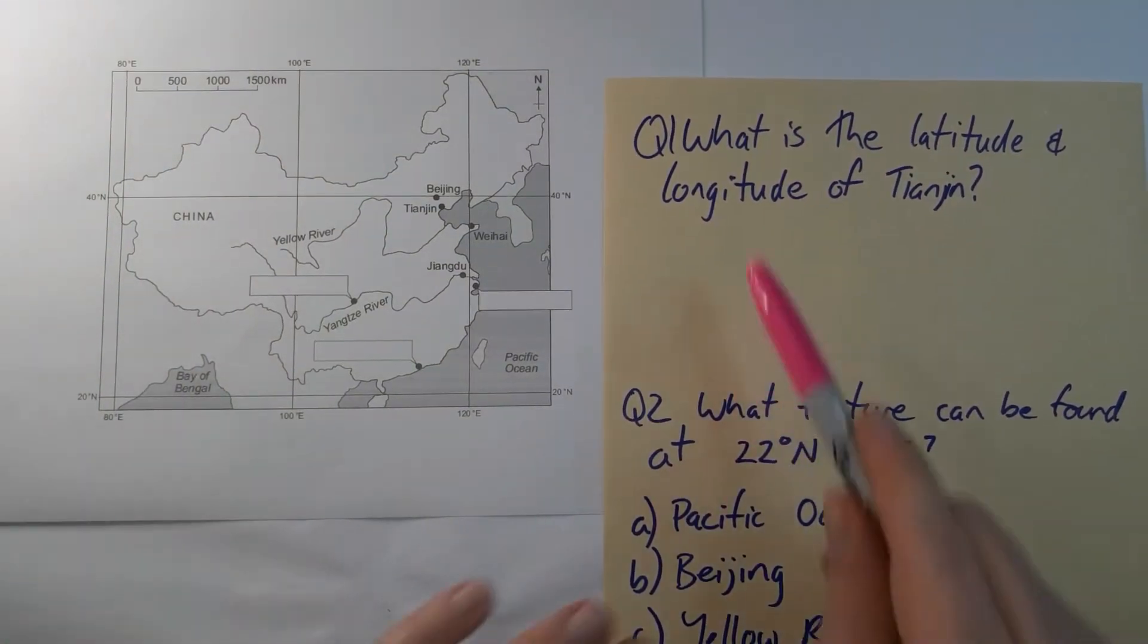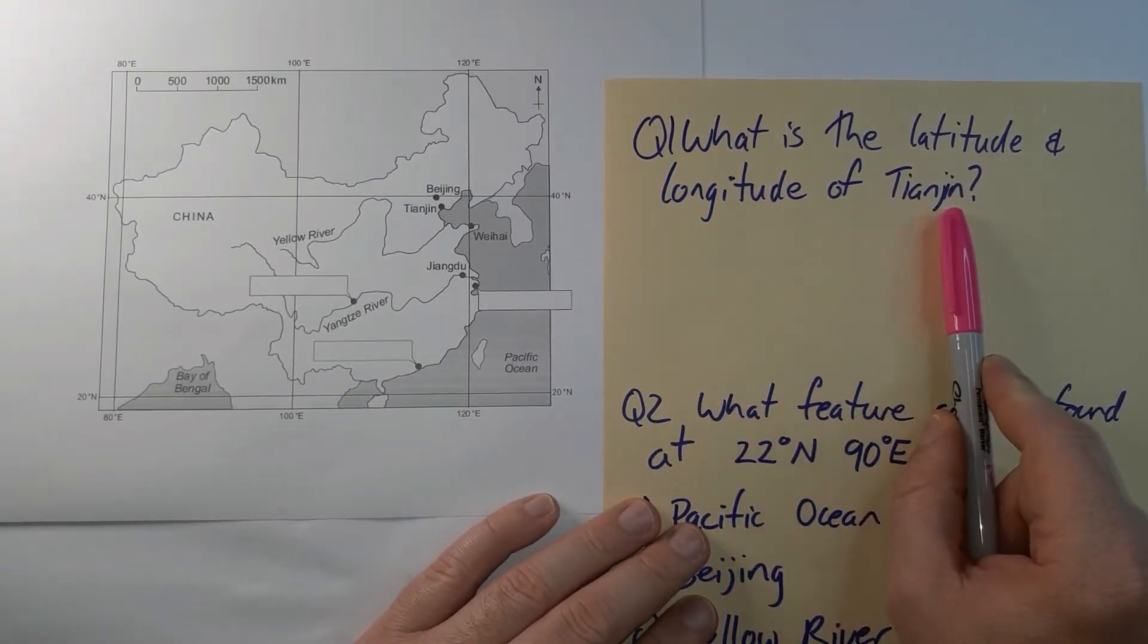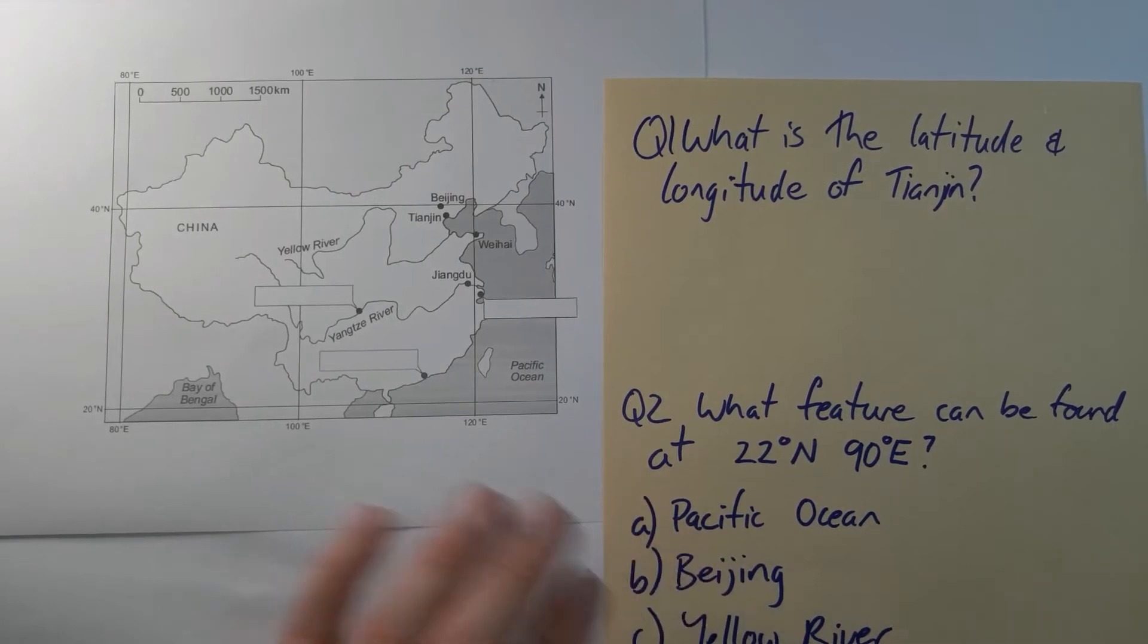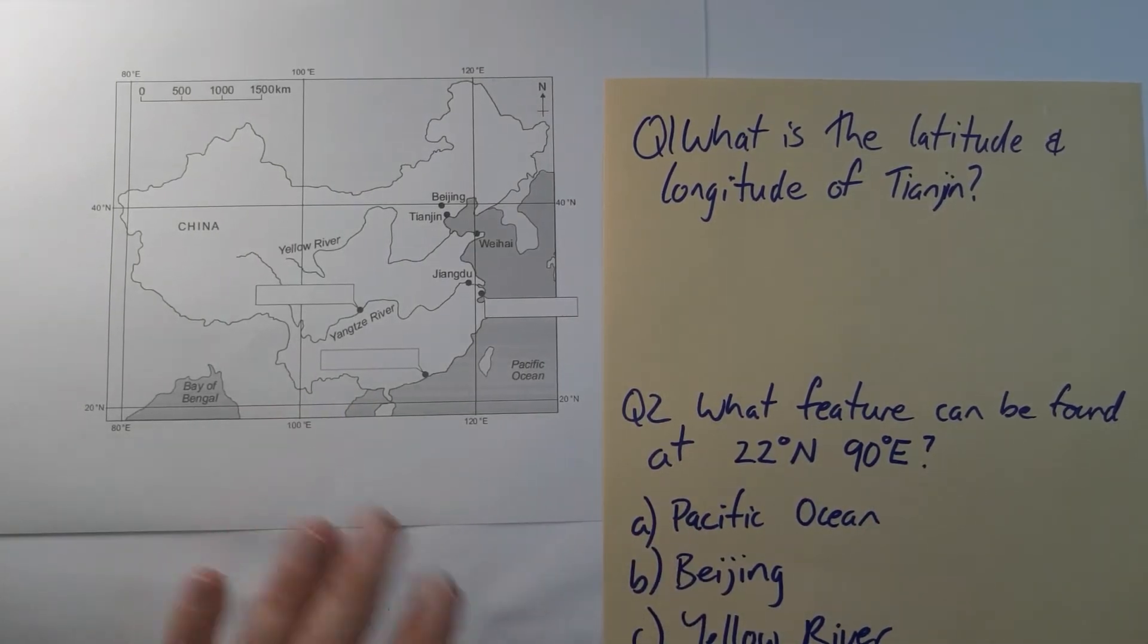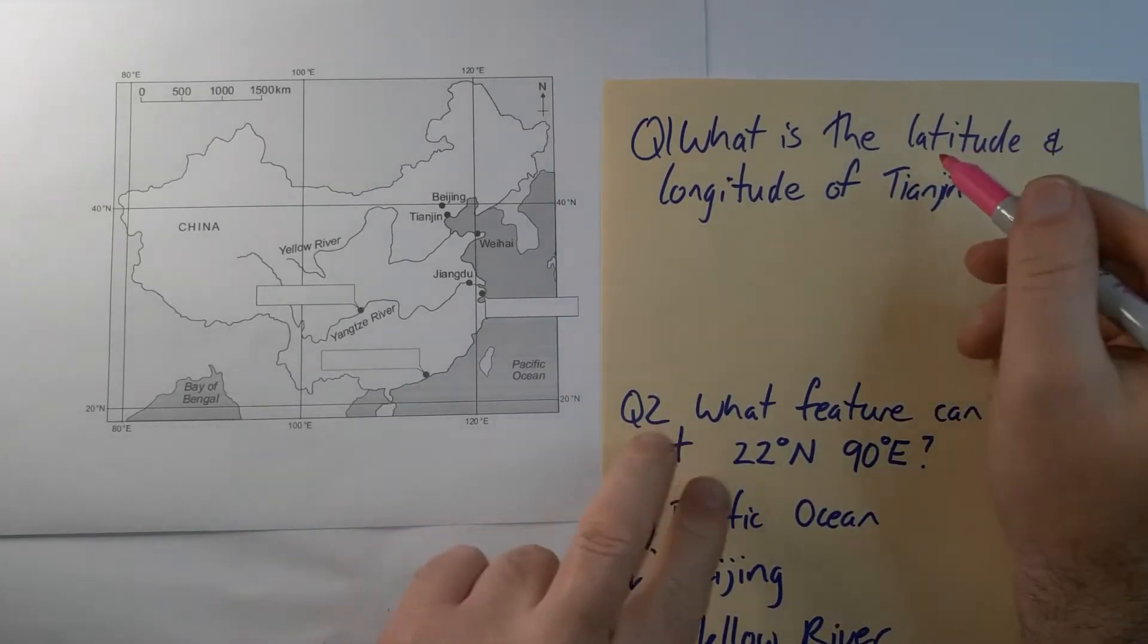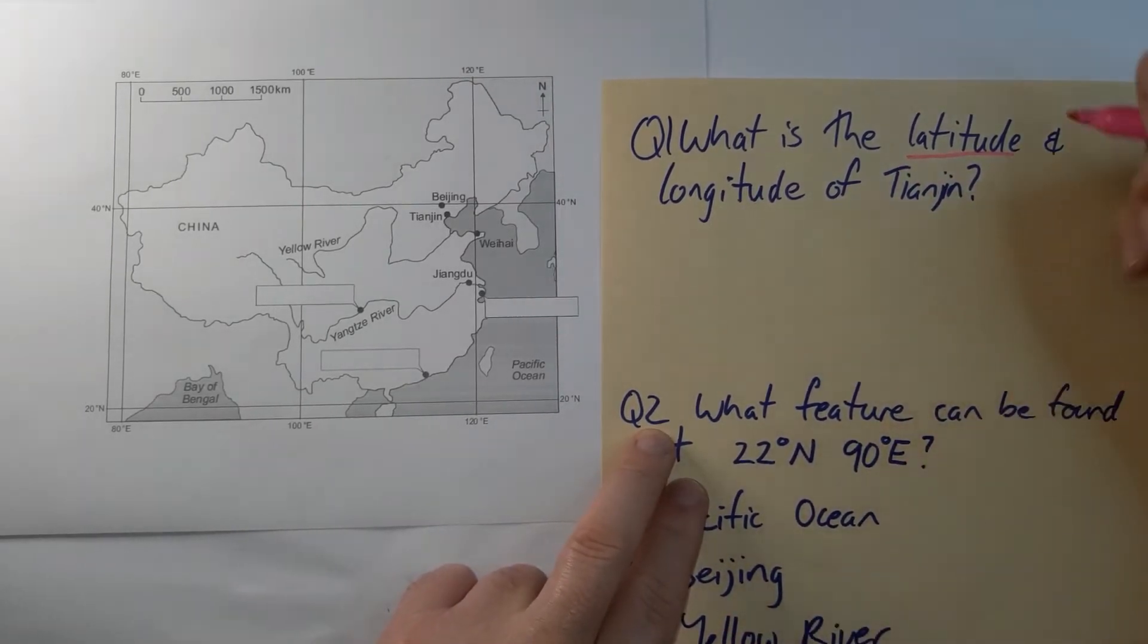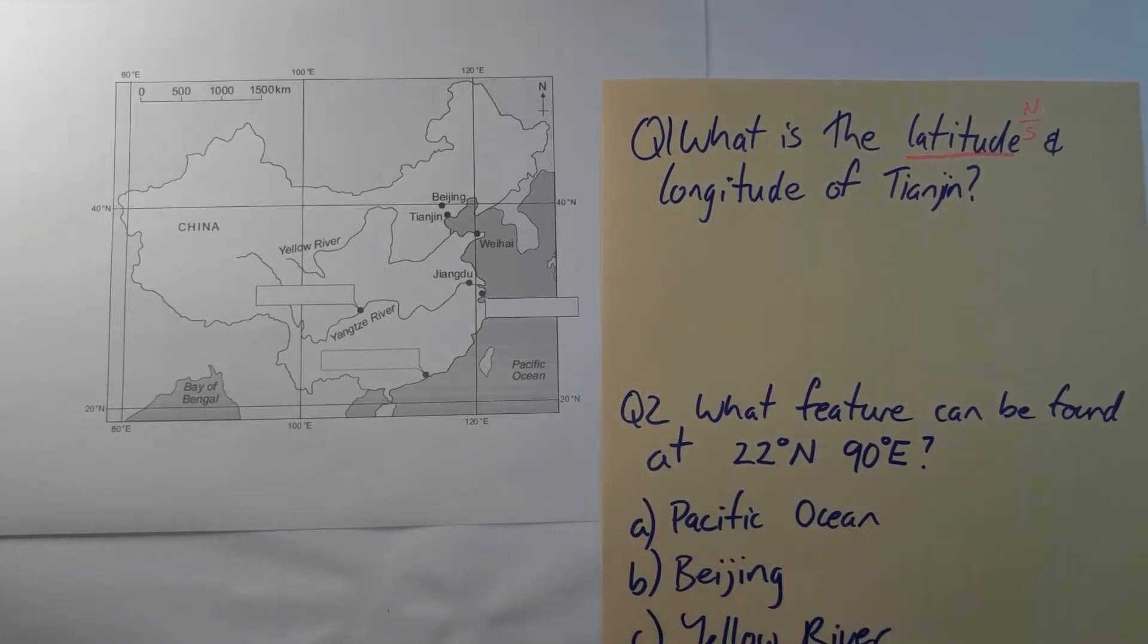So what is the latitude and longitude of Tianjin? Tianjin is one of the labeled cities on this map, so I apologize if it's too small for you to see but I'll talk you through it anyway. So what I first want to look at, and it's actually hinted at in the question, is we always do latitude first. And if we need to remind ourselves we're the north or south. We're not going to look at any values which talk about east or west first.